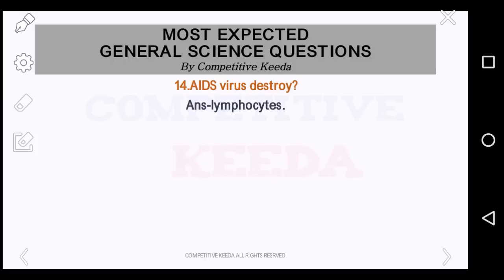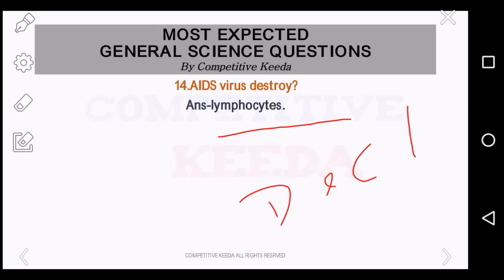AIDS virus destroys what? AIDS virus destroys the lymphocytes. And what does AIDS stand for? It is Acquired Immunodeficiency Syndrome. And which is AIDS day? It is December 1st. These questions can come. So when you are answering one question, try to relate it with different questions. The answer here is lymphocytes.